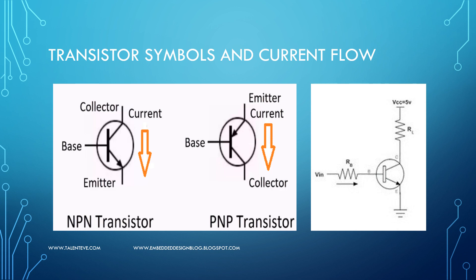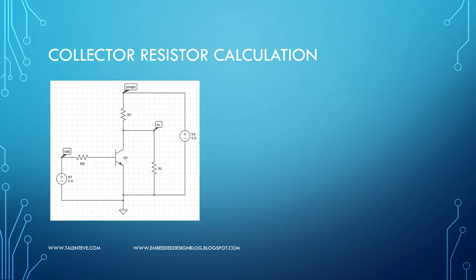And then this you see here is a simple switch configuration where there is a base resistor, there is a collector resistor, and then you apply voltage to the base and the collector. So see a simple circuit here where you want to calculate the collector resistor.